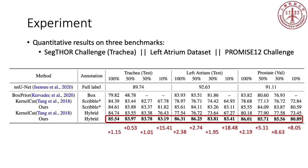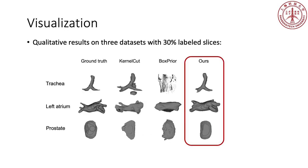We conduct comparisons to other methods on three benchmarks. The last row shows that ours with hybrid achieves the best performance. Besides, our method is robust in different label density settings, and it generalizes well to different datasets. Compared to kernel-cut and box-prior, our method generates masks with clean and complete shape.